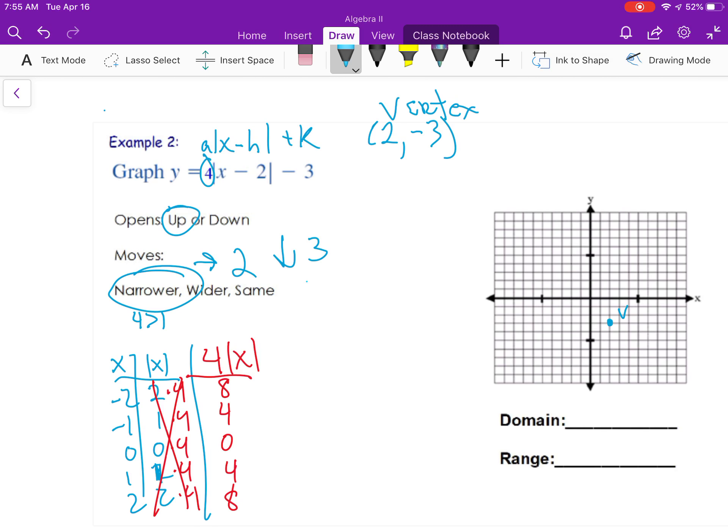So go over to the left and go up 8, over 1 up 4, and then plot the corresponding points. There is my absolute value graph.